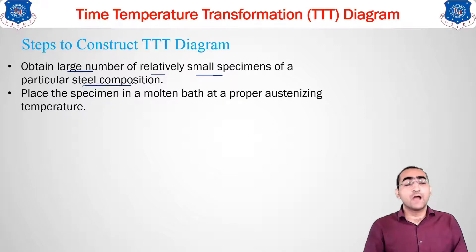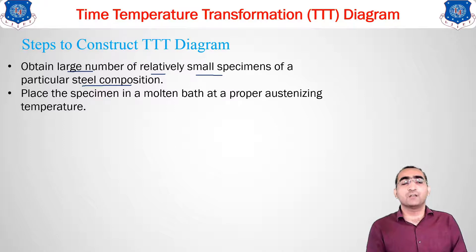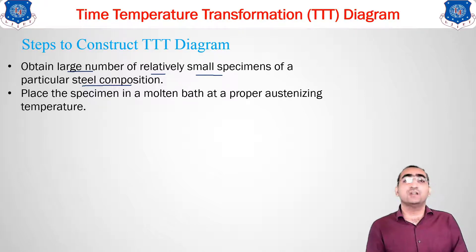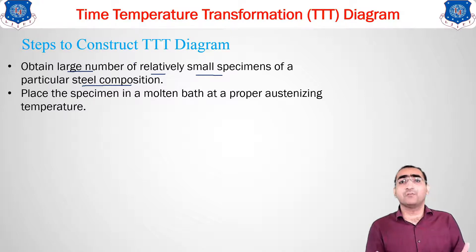After taking the specimens, place them in a molten bath maintained at the austenitizing temperature — the temperature at which steel transforms into austenite. This is always above 723 degrees Celsius, that is, above the recrystallization temperature.